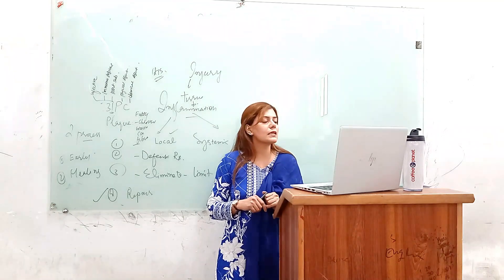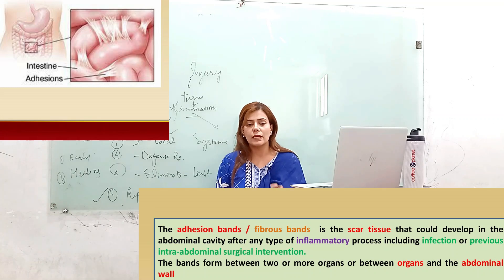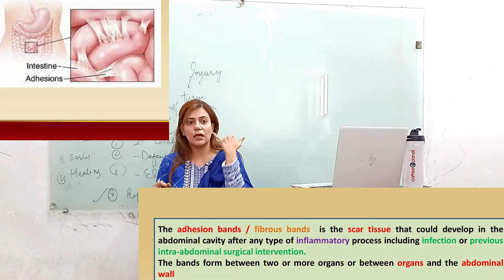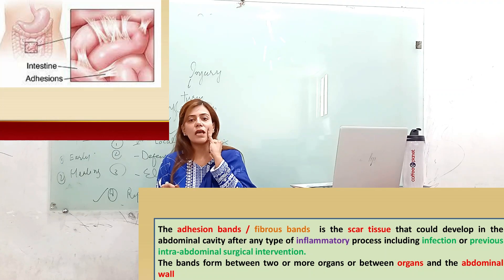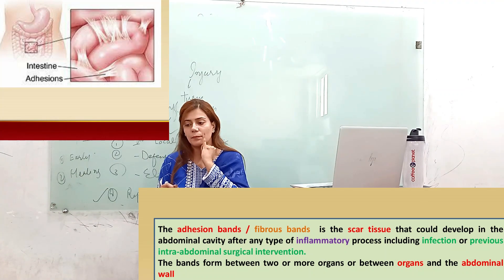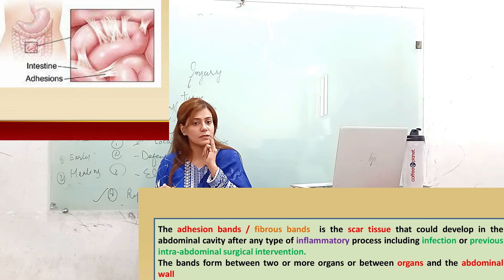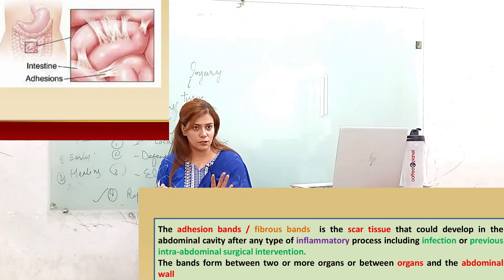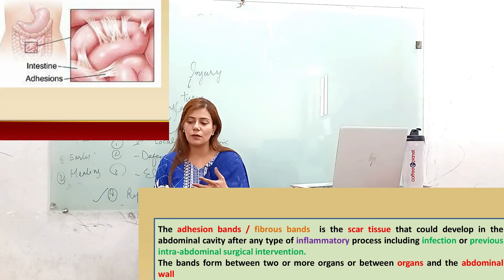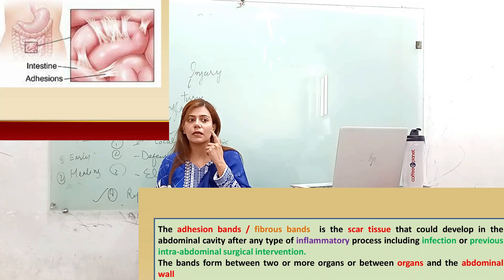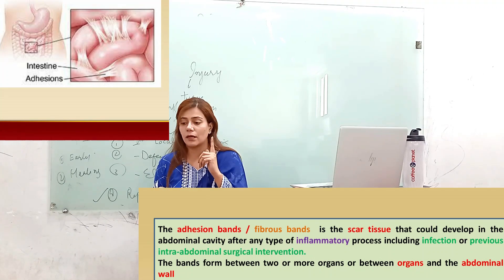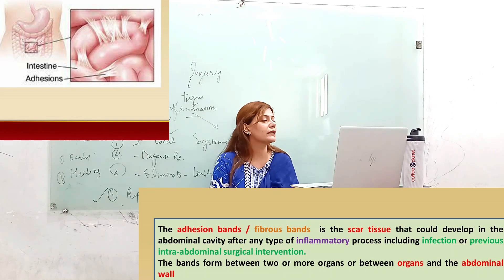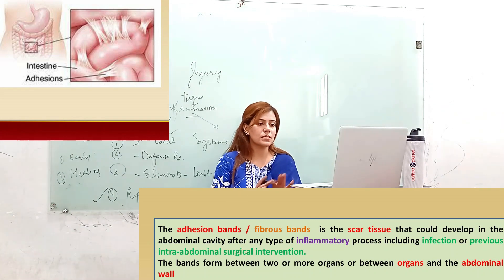A fibrous band is essentially scar tissue. Scar tissue can be very painful. It is made up of connective tissue — when the skin or an area heals, it forms a line of fibrous connective tissue. This is what we call the scar.